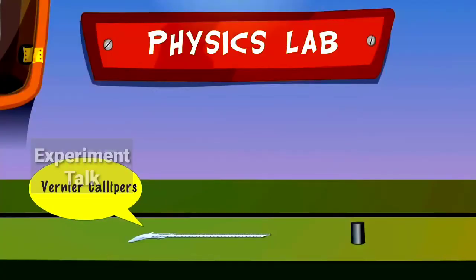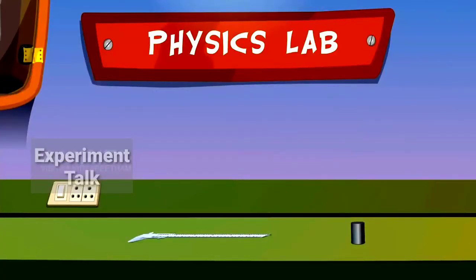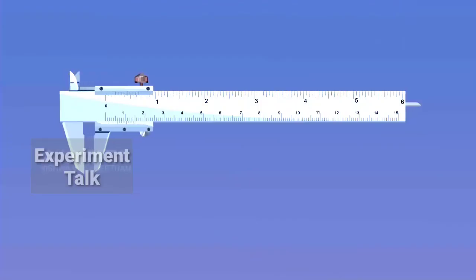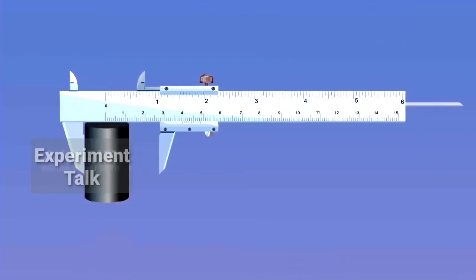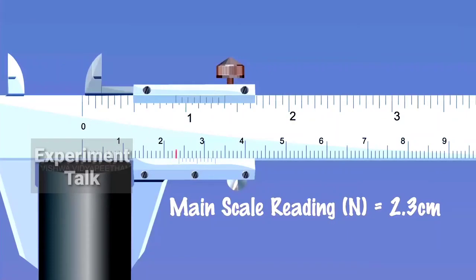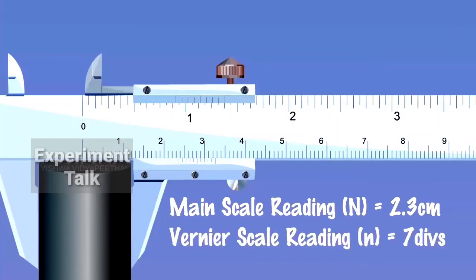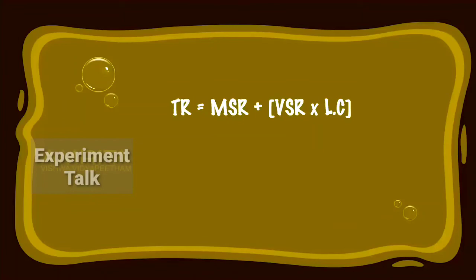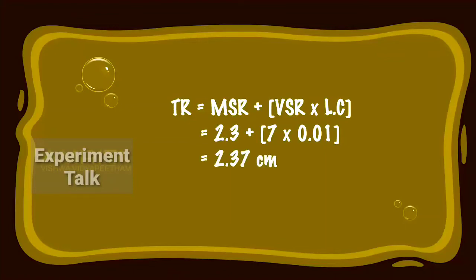Cylinder. Materials Required: Vernier Calipers and Cylinder. Take the Vernier Calipers and Cylinder. Place the cylinder between the outer measuring jaws width-wise to measure its diameter. Note its MSR and VSR readings. Calculation: TR is equal to MSR plus VSR into least count, that is equal to 2.3 plus 7 into 0.01, which is equal to 2.37 cm. That is D is equal to 2.37 cm.